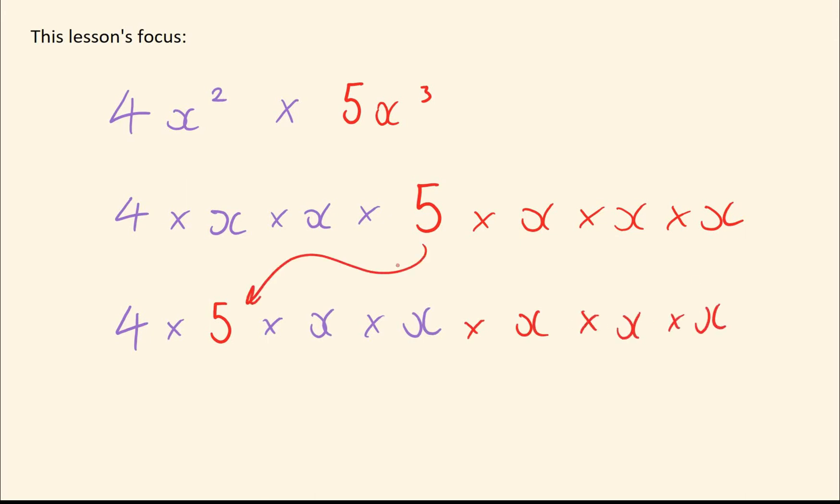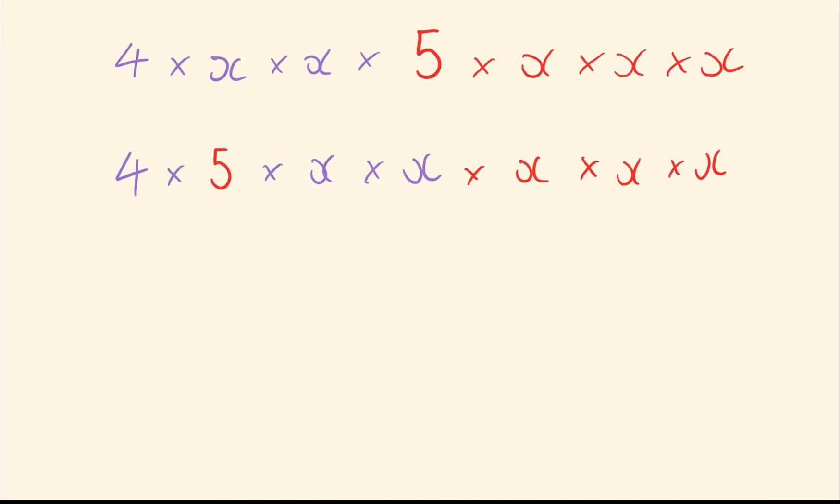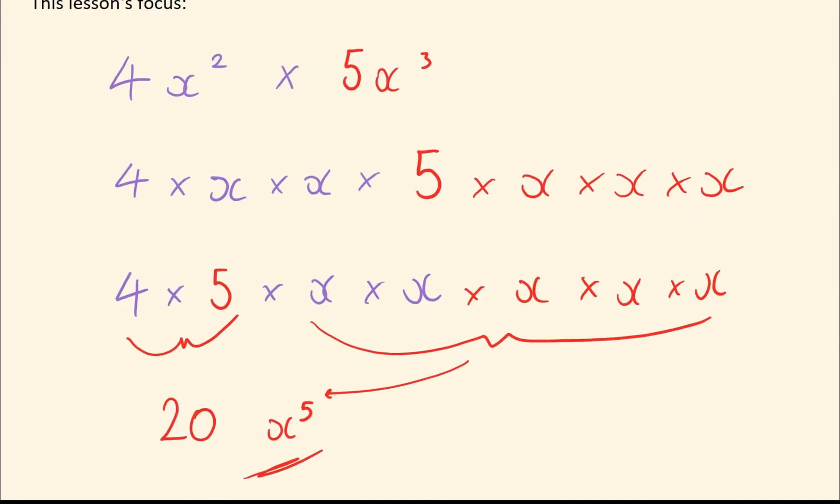And now we can start simplifying things down. We have 4 times 5, that is simply just 20. And over here, we have 5 x's times together, and that is simply x to the power of 5. And that's the answer.